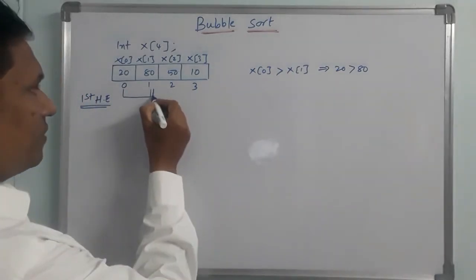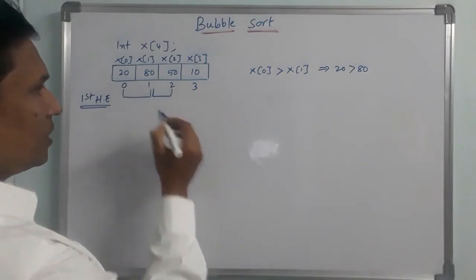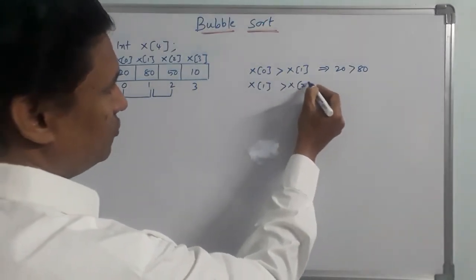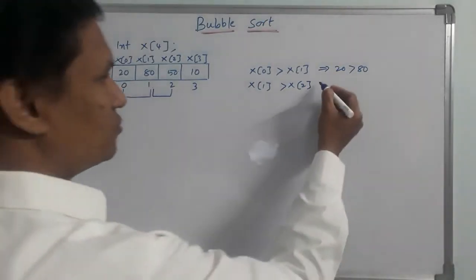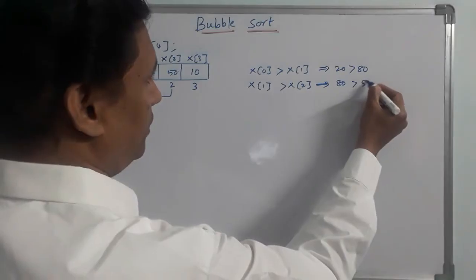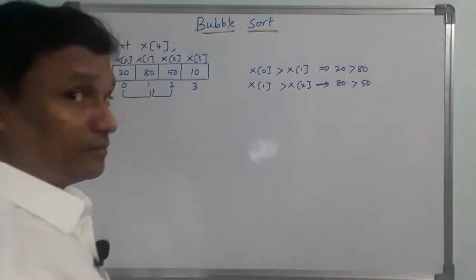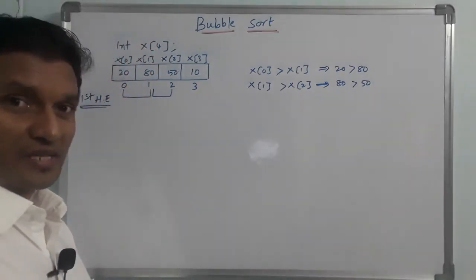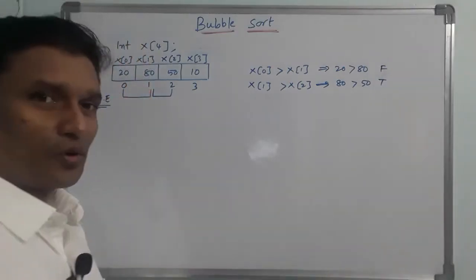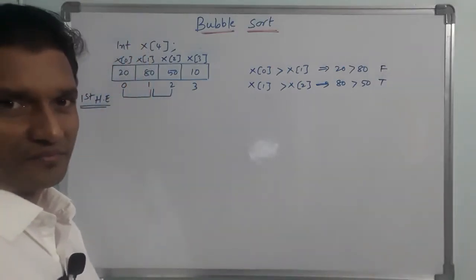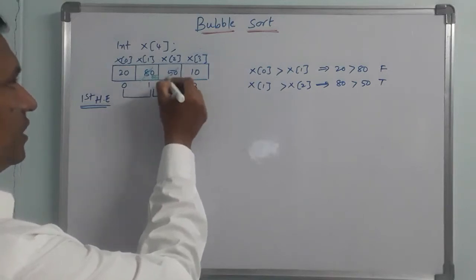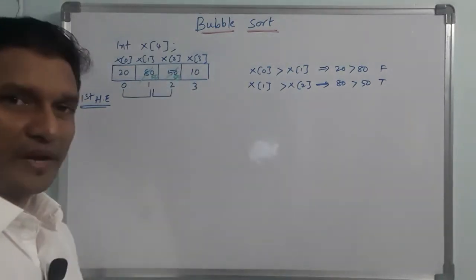Next comparison: x[1] versus x[2]. Is x[1] greater than x[2]? x[1] is 80, and x[2] is 50. Is 80 greater than 50? Yes, this condition is true. So we interchange them — 50 moves to position x[1] and 80 moves to position x[2].